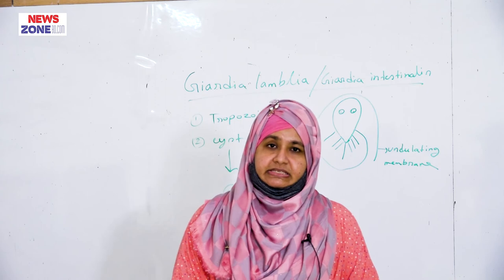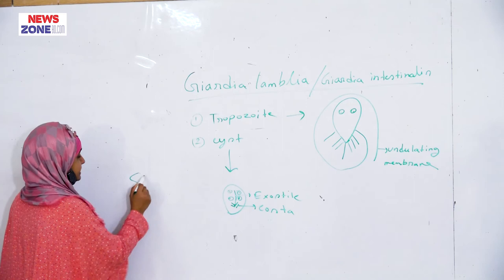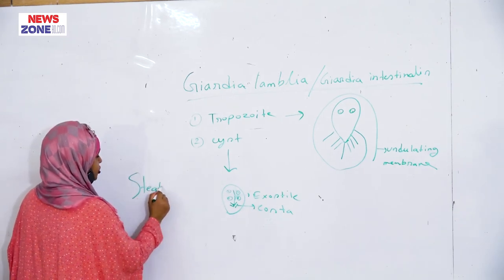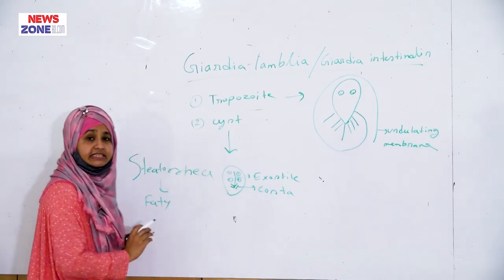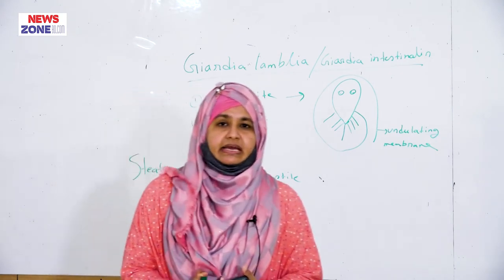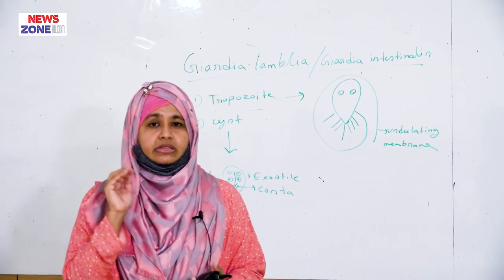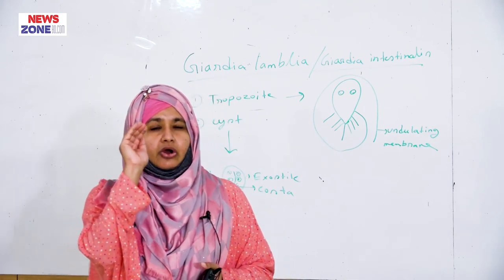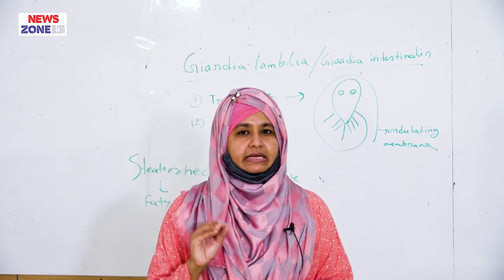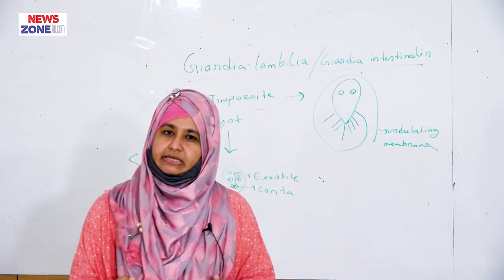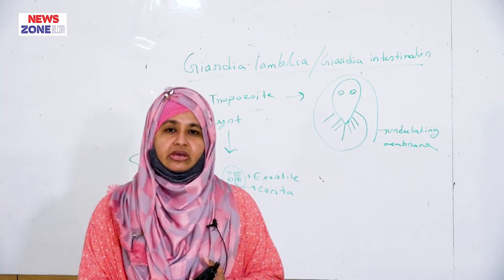In case of acute giardiasis, there is steatorrhea — that is called fatty diarrhea. What causes fatty diarrhea in giardiasis? When trophozoites attach by their ventral surface to the opening of the bile duct, the bile duct becomes closed. No bile enters the intestine, which prevents reabsorption of fat and causes fatty diarrhea.